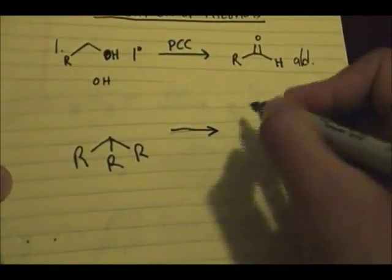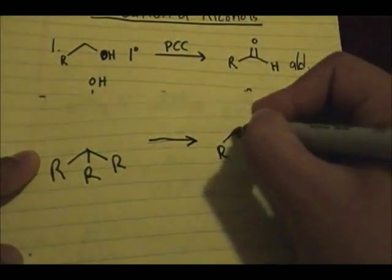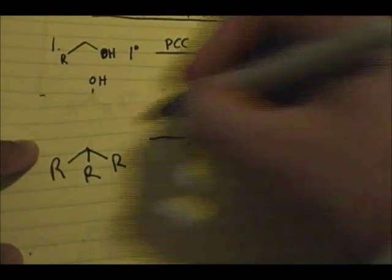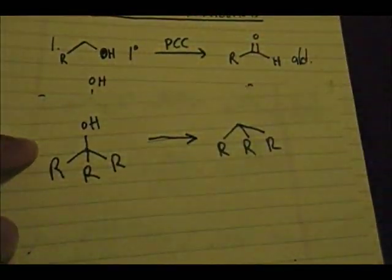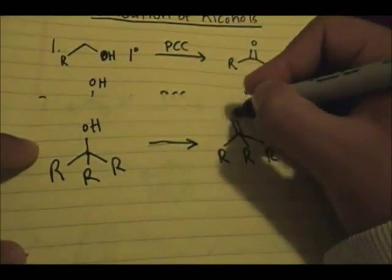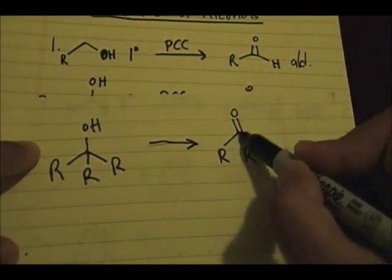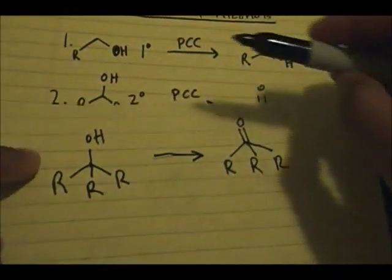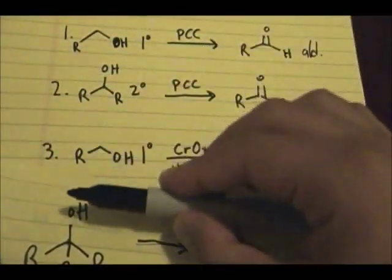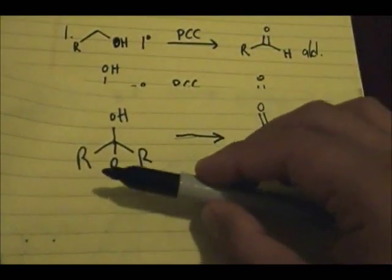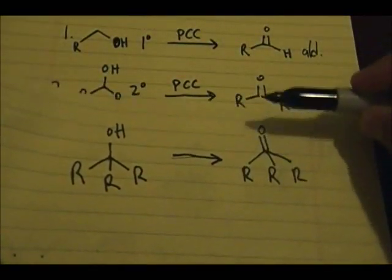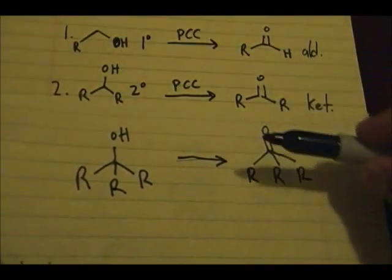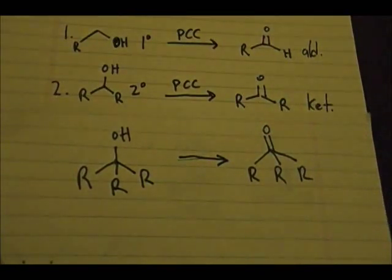If we use that same reasoning — R groups remain in the product — and we try to form a carbonyl compound from a tertiary alcohol, that violates the octet rule. This carbon would end up with 10 electrons, which completely goes against the octet rule. Because the R groups that start in the reactant remain in the product, if you try to form a carbonyl compound it violates the octet rule. That is why you can't use a tertiary alcohol — you have to have a primary or secondary alcohol, because you need to be able to lose H's.